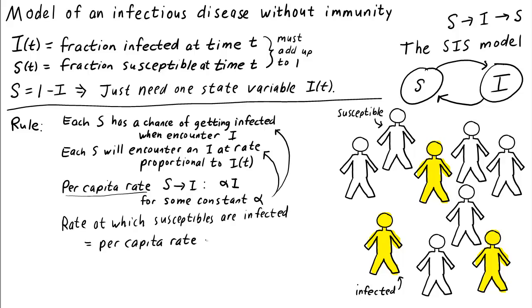Well, this equals the per capita rate times the number of susceptibles. Or, since we didn't write our model in terms of the total number of infected and susceptibles, but the fraction, we actually want the fraction of susceptibles rather than the total number of susceptibles in our rate. The per capita rate is alpha times i, and the fraction of susceptibles is s.